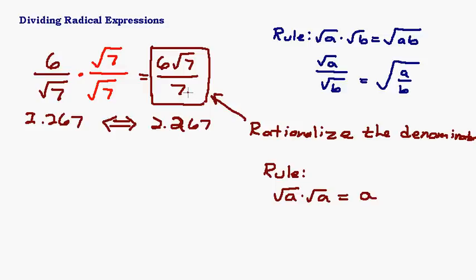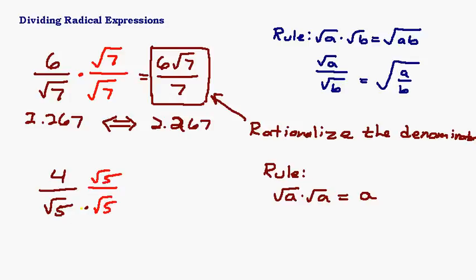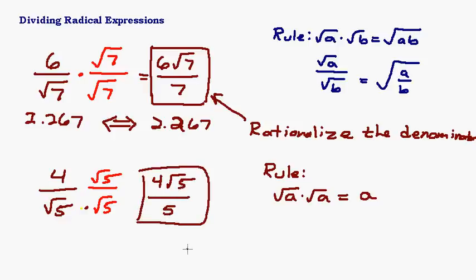Let's try one. Say you have 4 over square root 5 — rationalize the denominator. All you have to do is take the same number that's in the denominator and multiply by it. So multiply by square root 5 over square root 5. That gives you 4 square root 5 in the numerator and plain old 5 in the denominator, and you're done. That's all there is to it — piece of cake.